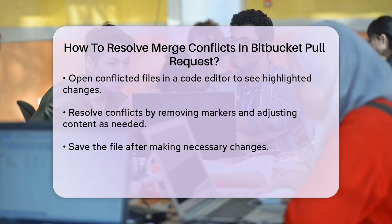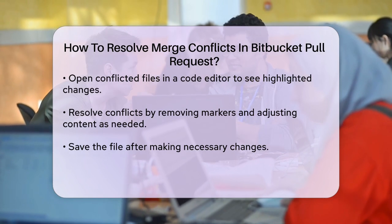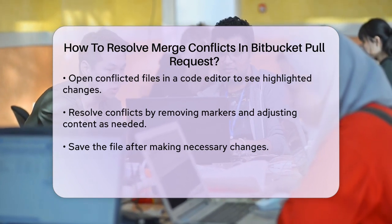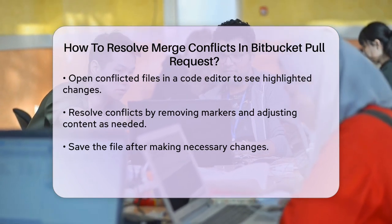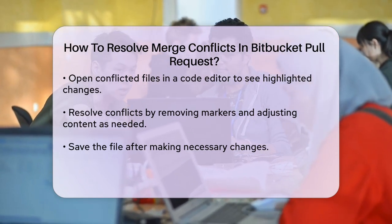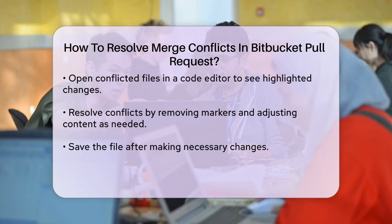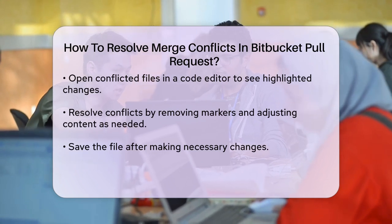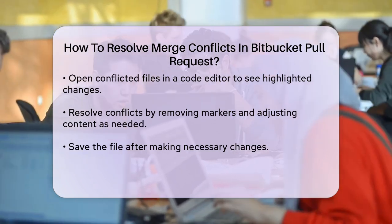After resolving the conflict, add the file to your git staging area using git add filename, and then commit the change with a meaningful message like git commit -m "resolved merge conflict".